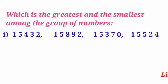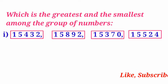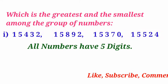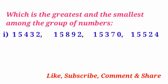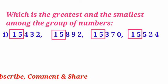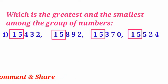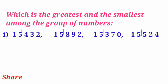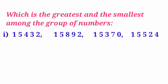Look at the first problem. This problem consists of four numbers, and all numbers have five digits. If we observe all these numbers from the left side, the first two digits are the same — that is, one and five. So, just leave these two digits and compare the third digits. The first number has four, the second has eight, the third has three, and the fourth has five. Eight is the greatest digit, so the greatest number is 15,892.